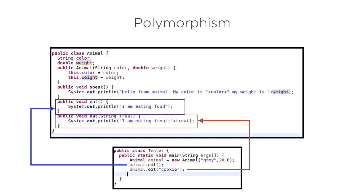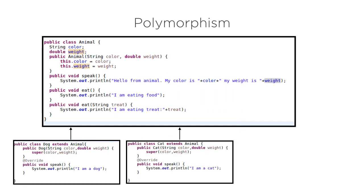This is resolved at compile time, hence the name compile-time polymorphism. Now we have covered inheritance in the earlier video, Java Object-Oriented Concepts Inheritance. Let us say we have two classes, Dog and Cat, which inherit from the Animal class. Both extend the Animal class and inherit all the attributes and methods of the parent Animal class. Now the child class can override the parent's method with the @Override annotation and provide their own implementation.